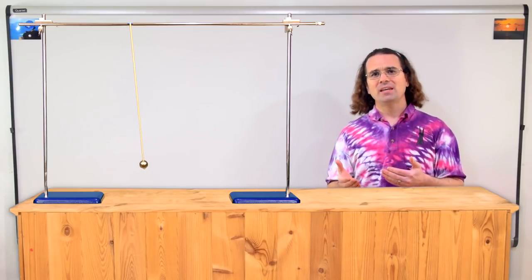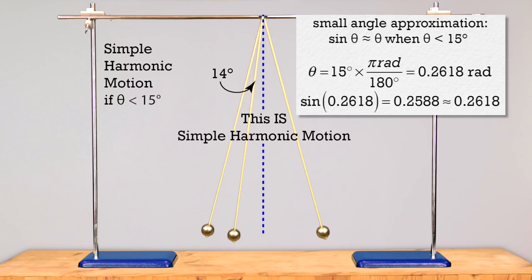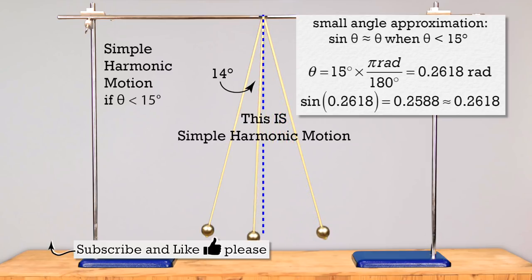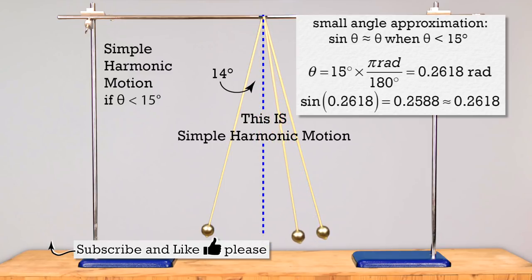However, know that it is because of what is called the small angle approximation. The small angle approximation states that, using radians as the units for theta, the sine of theta is approximately equal to theta for small angles — that would be for angles less than roughly 15 degrees. Some sources say it has to be less than 10 degrees, but a 15-degree maximum amplitude provides a reasonable approximation of simple harmonic motion. Thank you very much for learning with me today. I enjoyed learning with you.